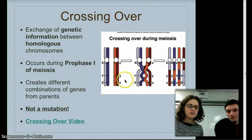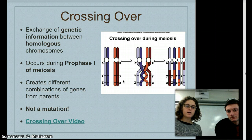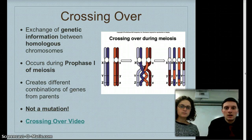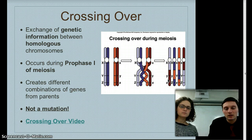Remember that these capital and lowercase letters represent alleles — they are the same genes crossing over, but you end up with a different shuffle of alleles. The genes remain the same. Because of crossing over, we see a mix-up of different allele combinations between chromosomes, which helps increase genetic diversity. The important thing to remember is that this is not a mutation.